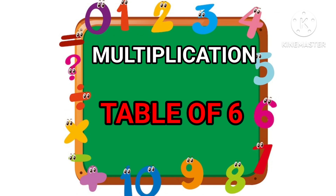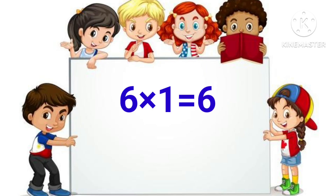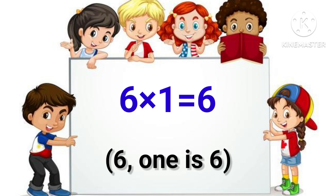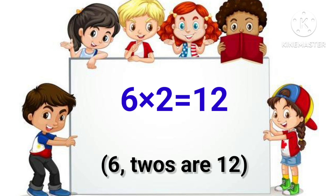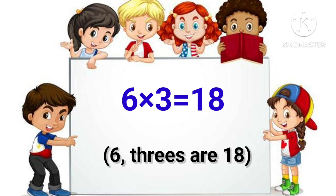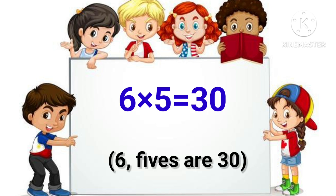Multiplication Table of 6. 6 1 is 6. 6 2's are 12. 6 3's are 18. 6 4's are 24. 6 5's are 30.